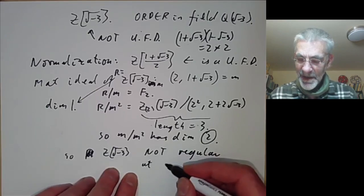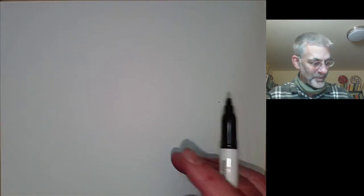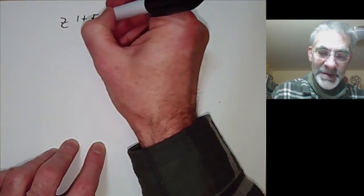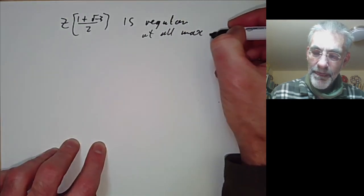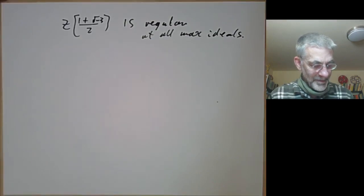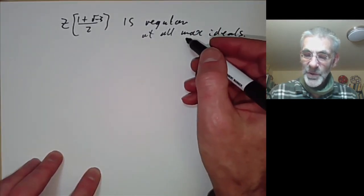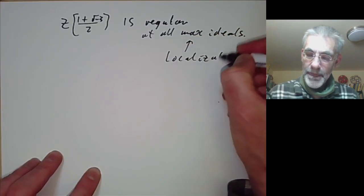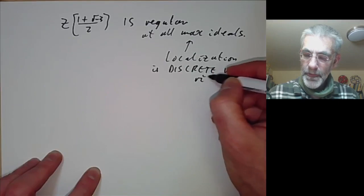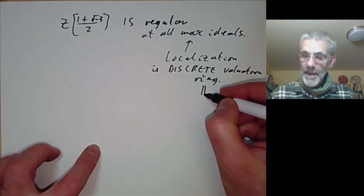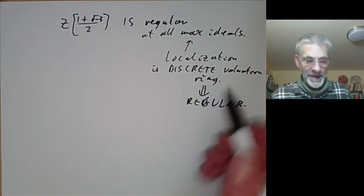ℤ[√−3] is not regular at the ideal (2, 1 + √−3). On the other hand, its normalization ℤ[(1 + √−3)/2] is regular — in fact it's regular at all maximal ideals. You can check this in several ways: it's a UFD, and at all maximal ideals the localization is a discrete valuation ring. Discrete valuation rings are certainly regular because they're one-dimensional and all ideals — not just the maximal ideal — are generated by one element.